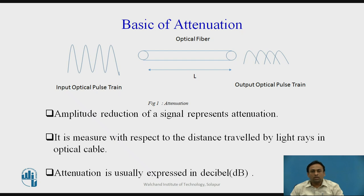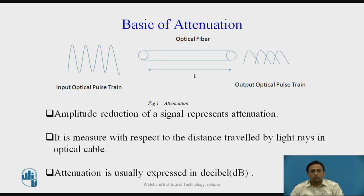Attenuation is measured with respect to the distance traveled by light rays in the optical cable and is always expressed in dB. In this lecture, we'll see what occurs to optical pulses when they propagate through an optical fiber. To understand attenuation and perform calculations, dB and dBm units are very useful.